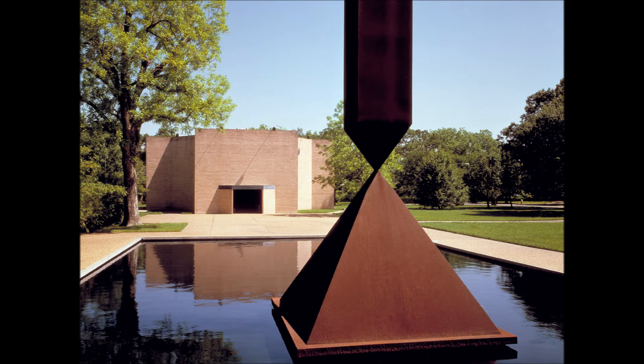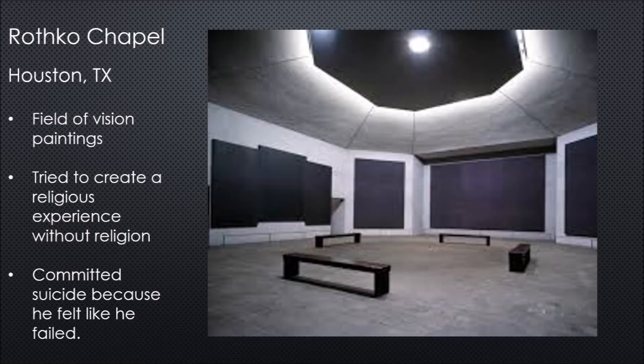At some point, Rothko built what he called the Rothko Chapel, filled with his depth-of-field paintings — what they'd call field-of-vision paintings. He tried to create a religious experience without religion. His idea was that you could come in no matter what religion you were. His ultimate goal was to be like the great masters who painted religious paintings that give you an amazing feeling — work honored and revered for centuries — but to take the religious content out and see if he could do it with skill alone.